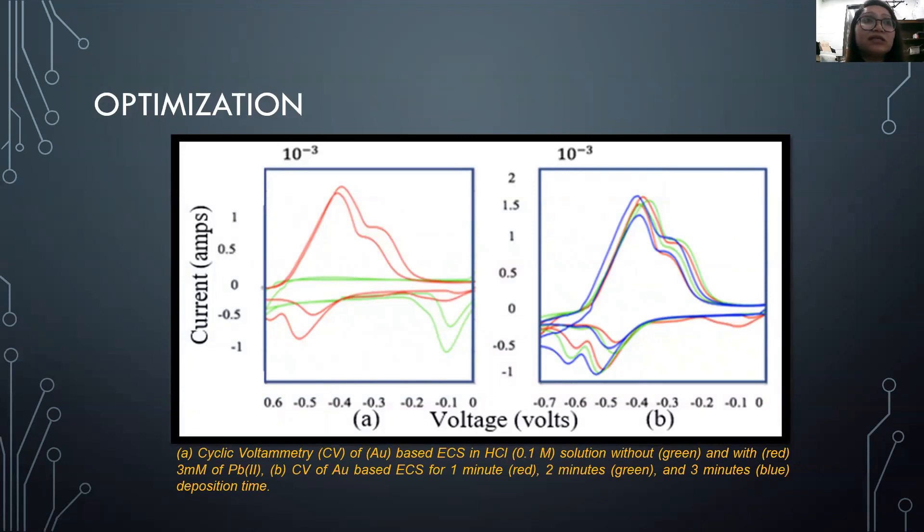In this slide, we have presented cyclic voltammetric analysis for our fabricated sensor in case of lead-contaminated drinking water optimized with 0.1 molar hydrochloric acid.